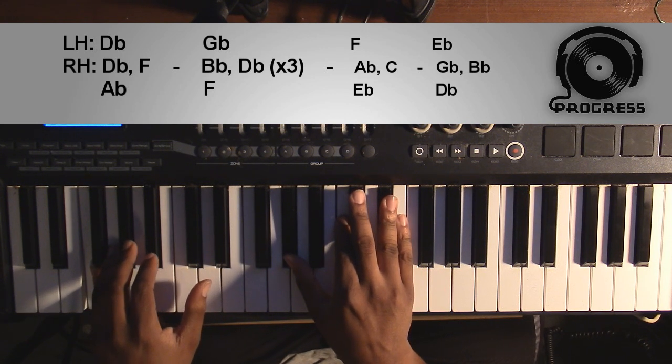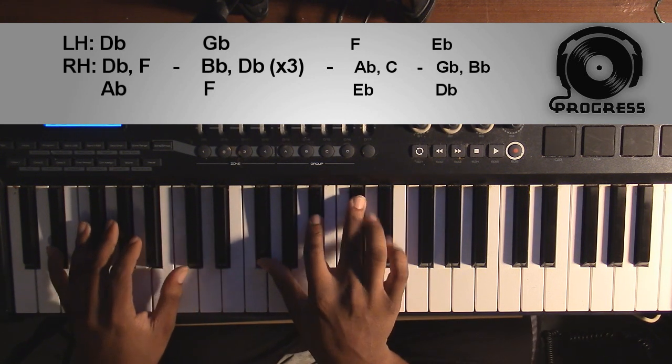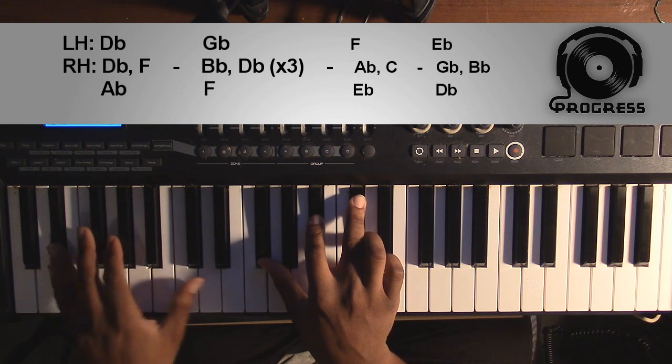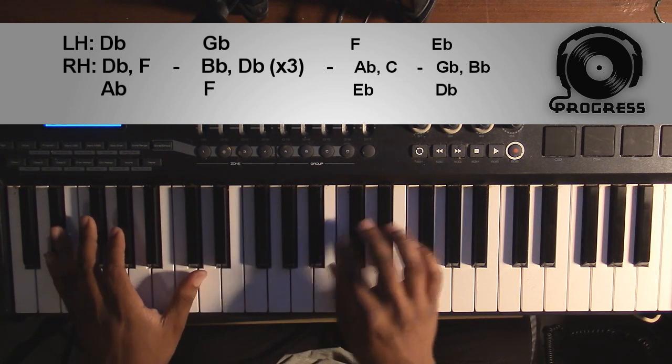And then the fourth and final chord's going to be an E-flat minor 7 chord. Left hand you'll have an E-flat, right hand you'll have a G-flat, a B-flat, and a D-flat.